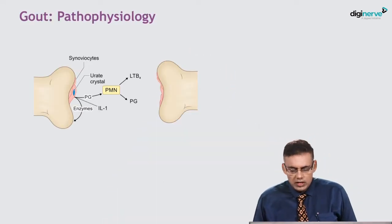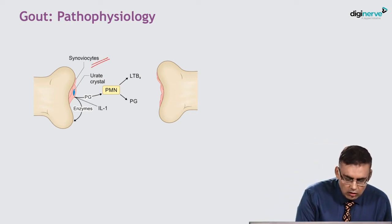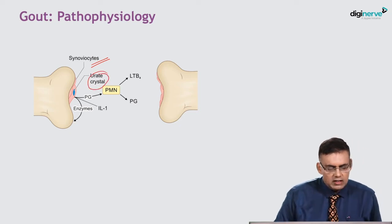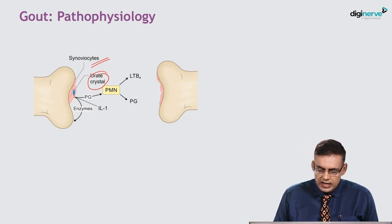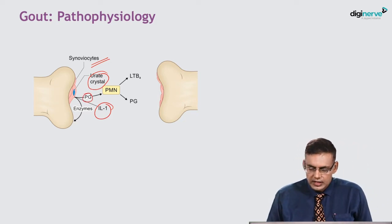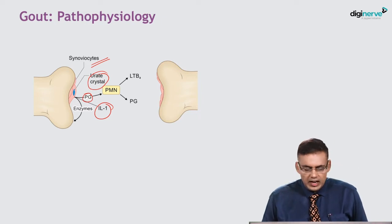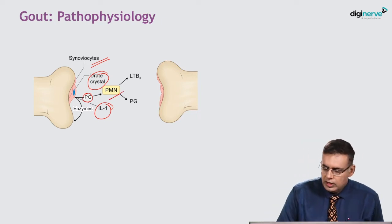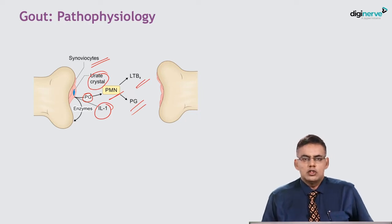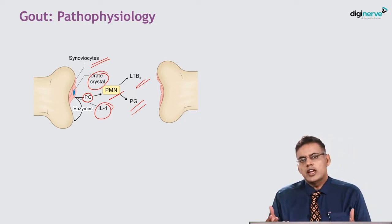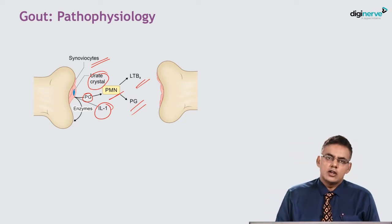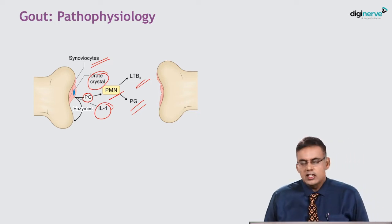In gout, the synoviocytes phagocytose uric crystals. Once phagocytosed, synoviocytes secrete inflammatory mediators like prostaglandins and interleukin-1. These further attract and stimulate polymorphonuclear monocytes, which on activation release leukotriene B4 and prostaglandins. There is a cascading effect: synoviocytes ingest uric crystals and release inflammatory mediators like prostaglandins and interleukins.